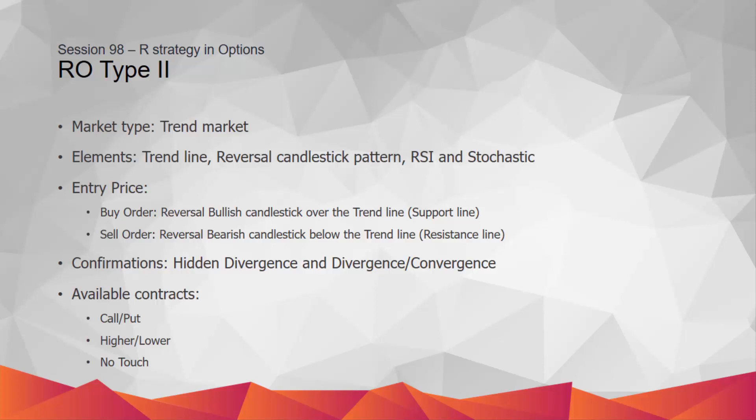The specifications of Type 2 strategy are as follows: it is suitable only for trend markets and can be applied for all symbols and all time frames. The elements are trend line, reversal candlestick pattern, RSI and stochastic. The entry price for buy order is a reversal bullish candlestick pattern over the trend line or support line, and for sell order it is a reversal bearish candlestick pattern below the trend line or resistance line. The confirmations are hidden divergence, bullish and bearish format, as well as divergence and convergence.